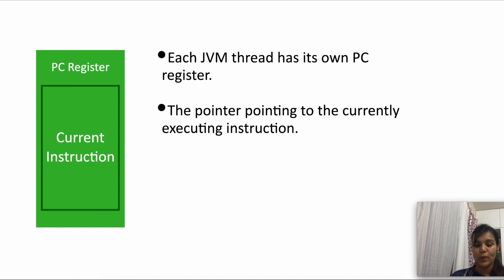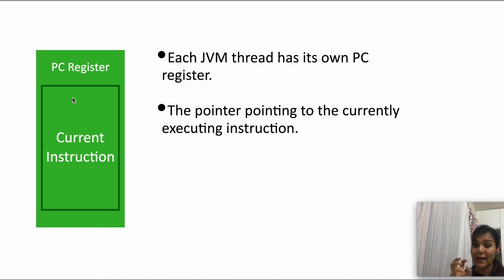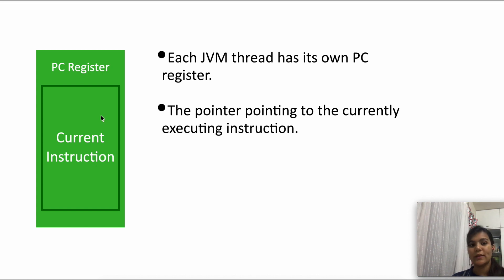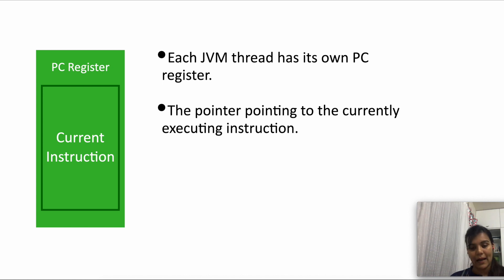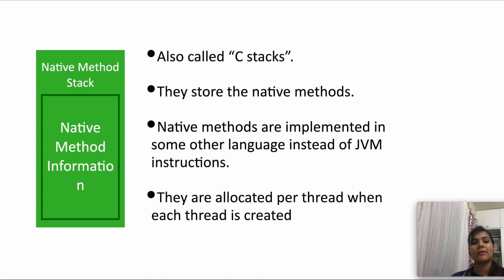The PC register stores the program counter pointer — it points to the currently executing instruction. This pointer is stored in the PC register for all non-native methods, i.e., methods that belong to the application. If there is a native method running, the address would be undefined.